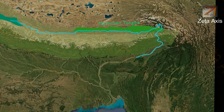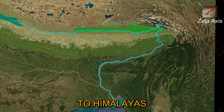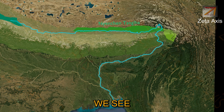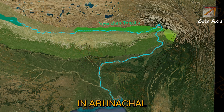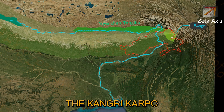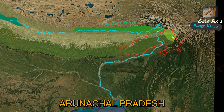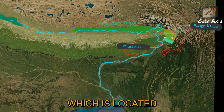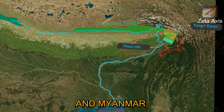On the eastern margin of Trans-Himalayas, east of the Brahmaputra, a part of Trans-Himalayas extends southwards into Arunachal Pradesh. This part is called Gangri Karpo. This range extends in Arunachal Pradesh till Mishmi hills, which is located on the boundary of India and Myanmar.